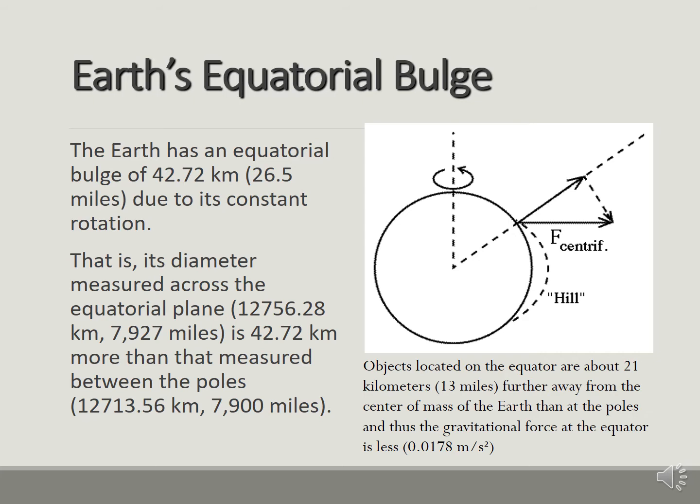So the Earth's equatorial bulge. The Earth has an equatorial bulge of 42.72 kilometers and that's due because of the constant rotation. That diameter is measured across the equatorial plane and that's about 42.72 kilometers more than the measure between the poles. You just have to remember what this bulge is.